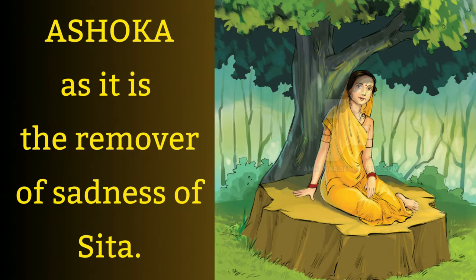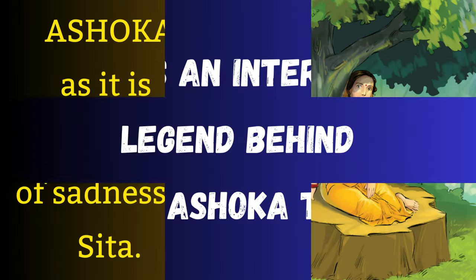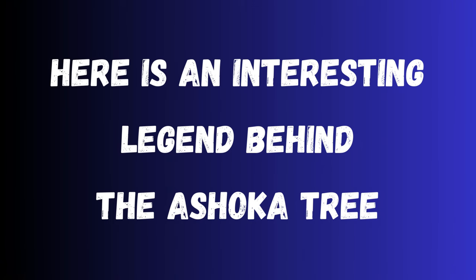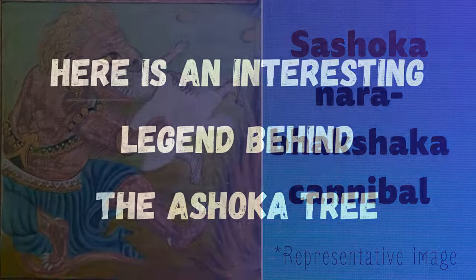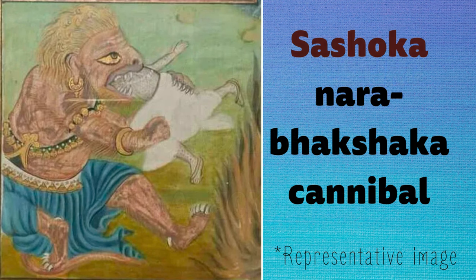The Ashoka tree is called Ashoka as it is the remover of sadness of Sita. Here is an interesting legend behind the Ashoka tree. One day, the demon hunter Sashoka meets a sage and wonders how the rishi could maintain absolute calmness.